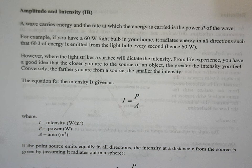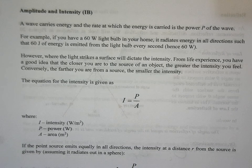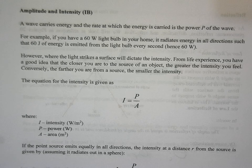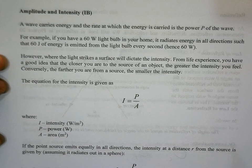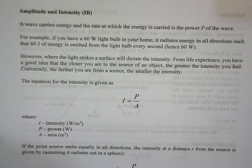For IB, we want to talk about amplitude and intensity. A wave carries energy, and the rate at which it carries that energy is what we call the power, which we saw in the last unit. For example, if we have a 60-watt light bulb, that tells us it will radiate energy in all directions such that 60 joules of energy is emitted every single second — 60 joules per second, which is just a watt.